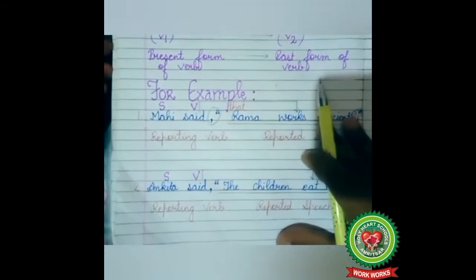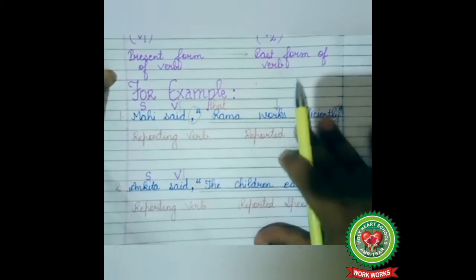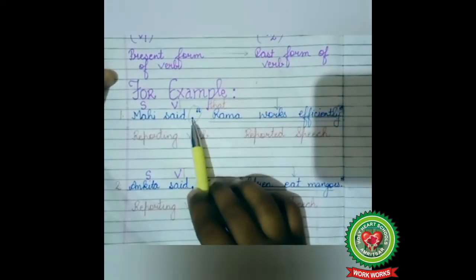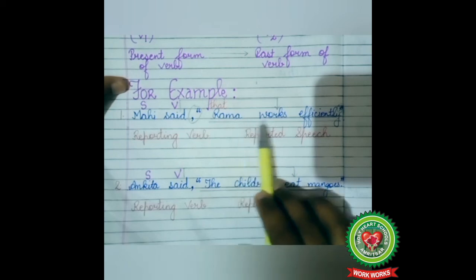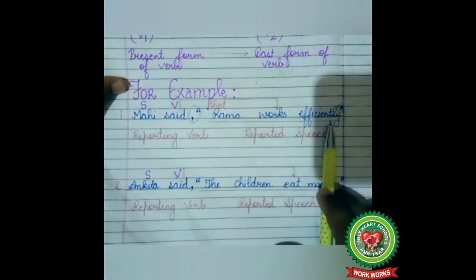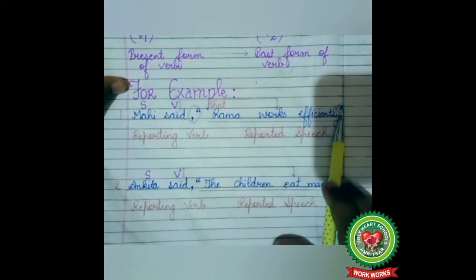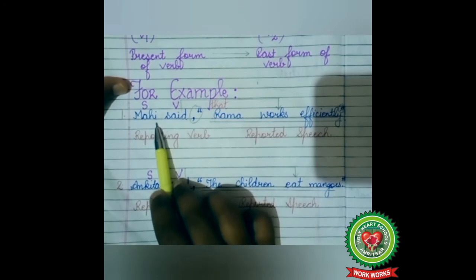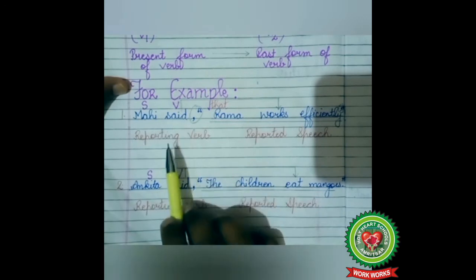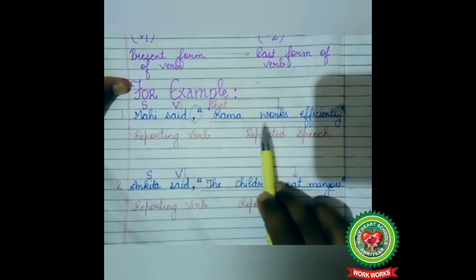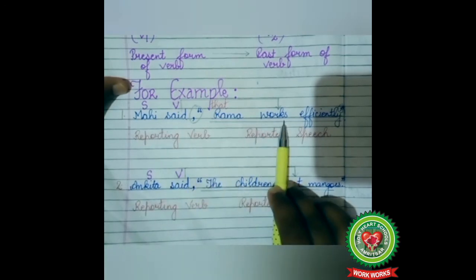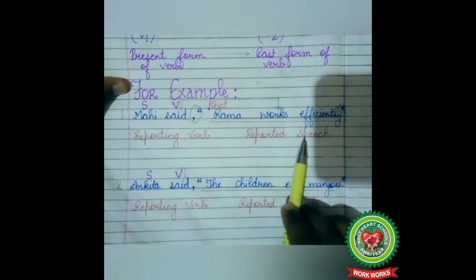Look at example number one. Mahi said, inverted commas, 'Rama works efficiently.' Full stop, inverted commas close. Here Mahi is the reporting verb — Mahi said — and 'Rama works efficiently' is the reported speech.